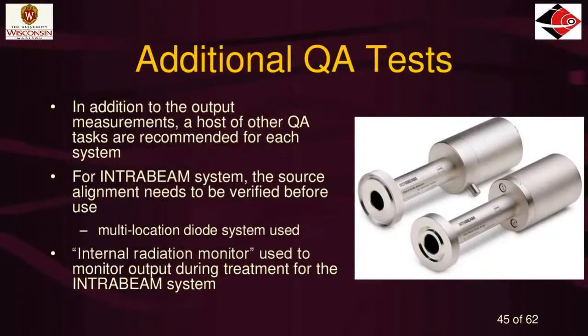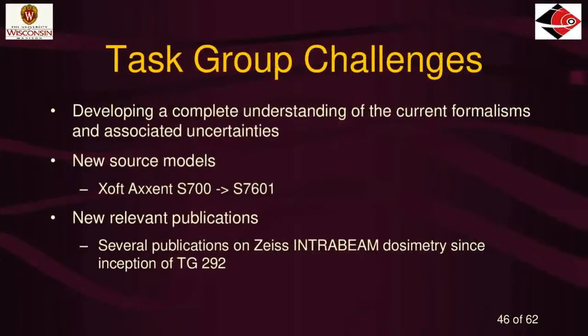For other QA tests, every time you treat with one of these systems you have to do additional tests. The IntraBeam requires aligning the drift tube — it can get bent, so you have to make sure it's straight for the day. There are also internal diodes to check output each day, similar to how Zoft uses a well chamber. A host of QA tests are recommended for each system, and the manufacturer provides a list of what you're supposed to do.